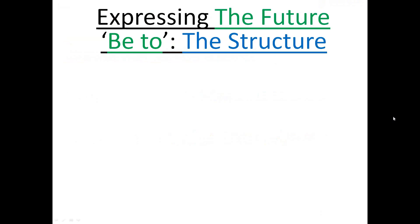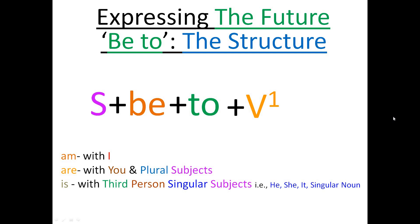Now let's see how the phrase be to is incorporated into a sentence to express the future. You take the subject first, and according to the number and the person of the subject, you take the appropriate form of the verb in the present tense. And then to that you add to and then the V1 form of a main verb. Additionally, you can use other words if required. So remember the structure: subject plus be plus to plus V1 and then additional words if required.